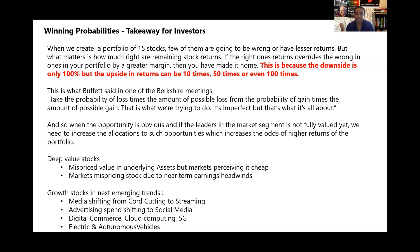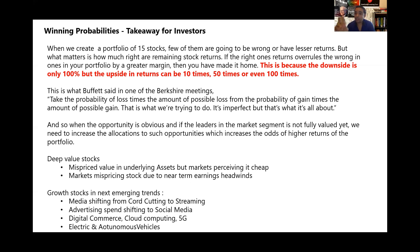Deep value stocks involve two conditions: one where there is mispriced value in the underlying assets of a company but the market is perceiving it as very cheap for whatever reasons — that is one way to find value through the assets. The other way is when the market misprices a stock due to near-term earnings headwinds but long-term earning potential still remains intact — that is underpricing by the market in terms of earnings. So two scenarios: one based on underlying hard assets in heavy-asset business models, and one based on the earnings model — that's where you get deep value stocks.